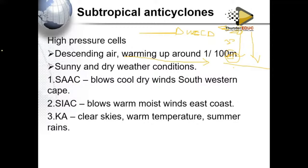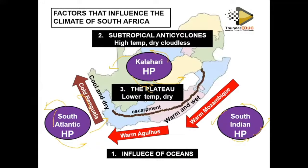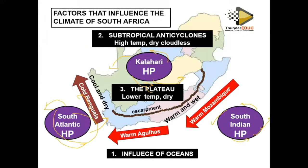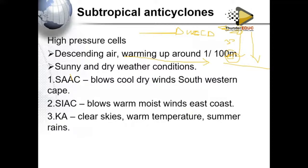The South Atlantic high pressure system — where do we find it? We find the South Atlantic anticyclone on the western side of the country, and therefore it blows cool dry winds towards Cape Town. These winds pass over the cold Benguela currents, bringing dry and cool conditions towards the Western Cape.